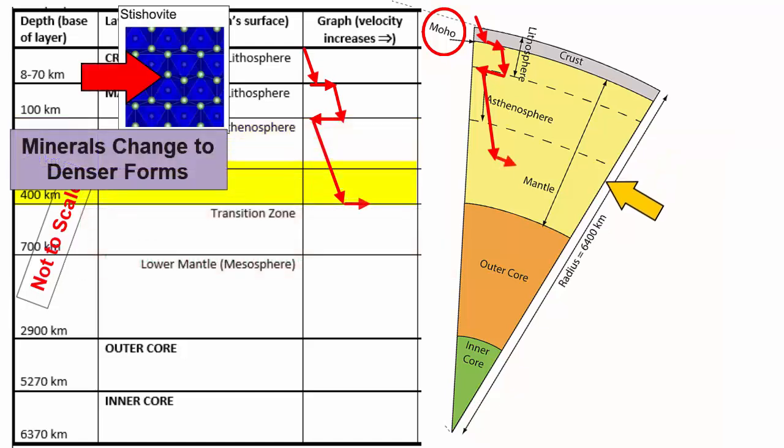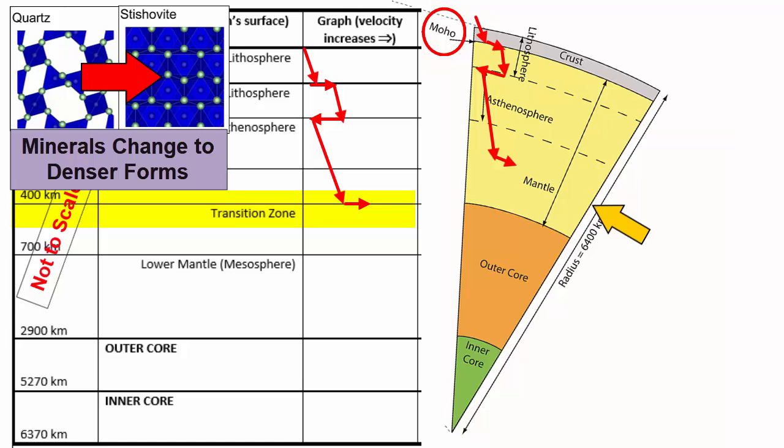Then we hit the transitional zone of the mantle, where many minerals have transformed under high pressures into denser forms, new minerals with more tightly packed atoms. We see a jump in seismic wave velocity here with wavefronts bending upwards.